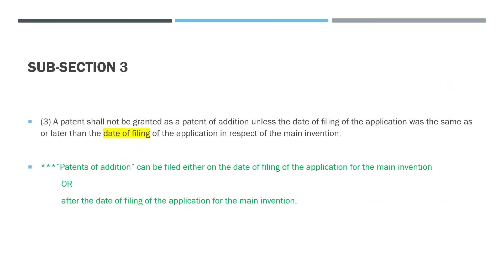Now we go to subsection 3: a patent shall not be granted as a patent of addition unless the date of filing of the application was the same as or later than the date of filing of the application in respect of the main invention. The simple meaning is: patents of addition can be filed either on the date of filing of the application for the main invention or after that date, but not before.